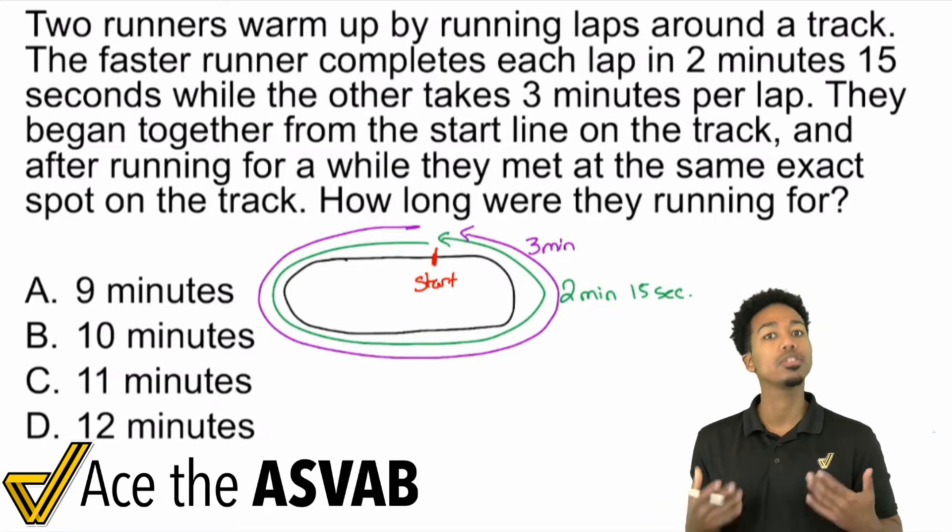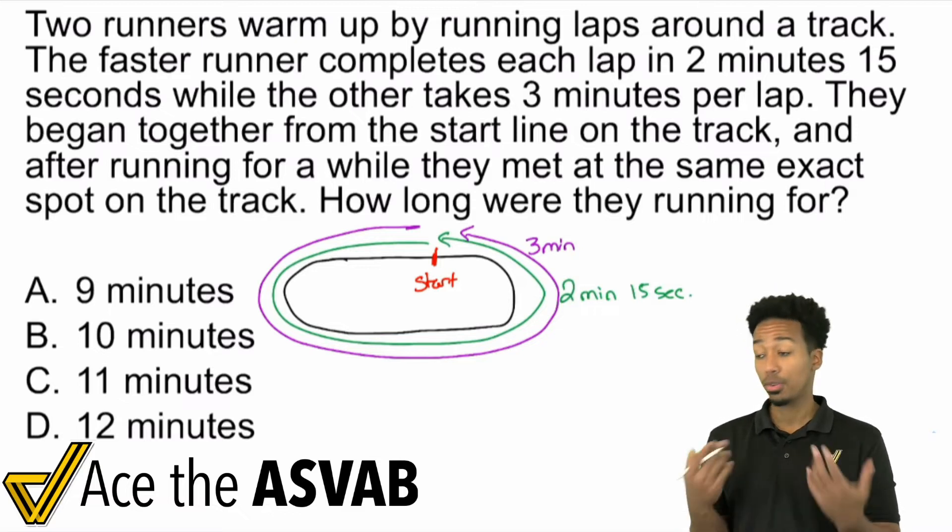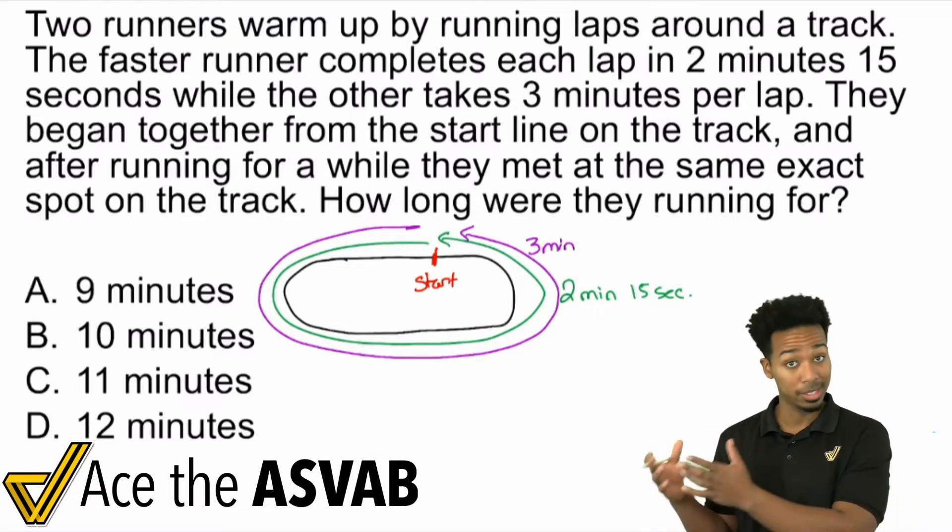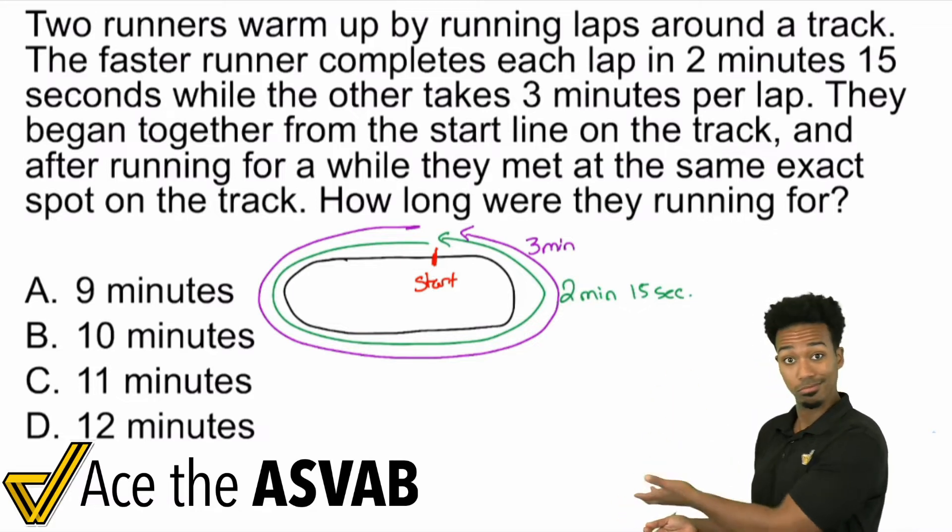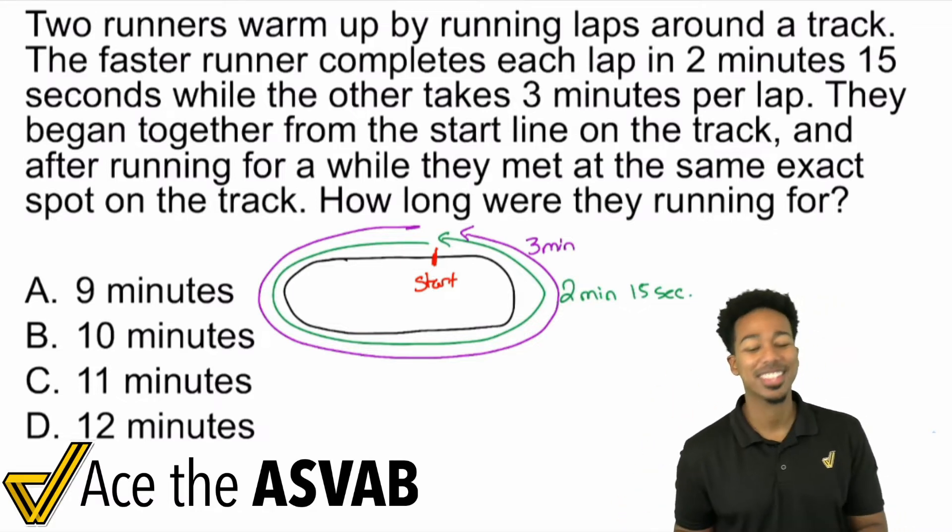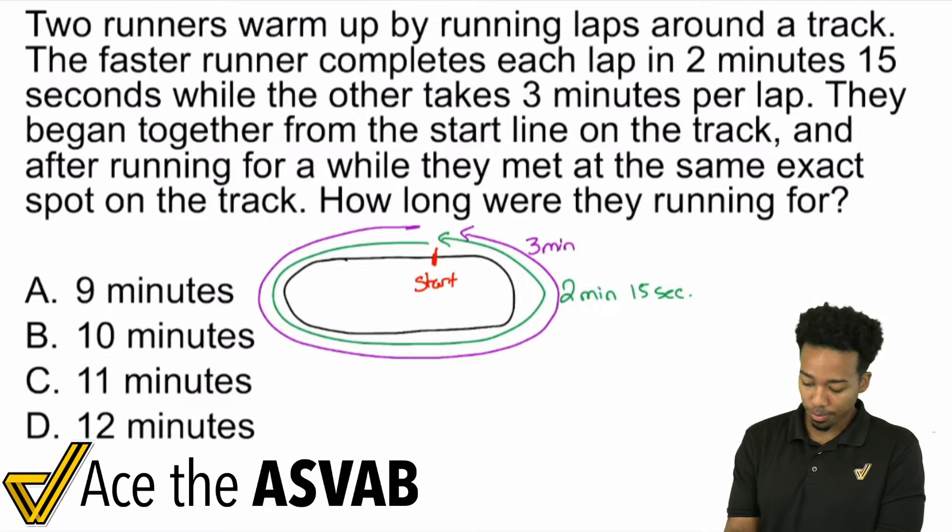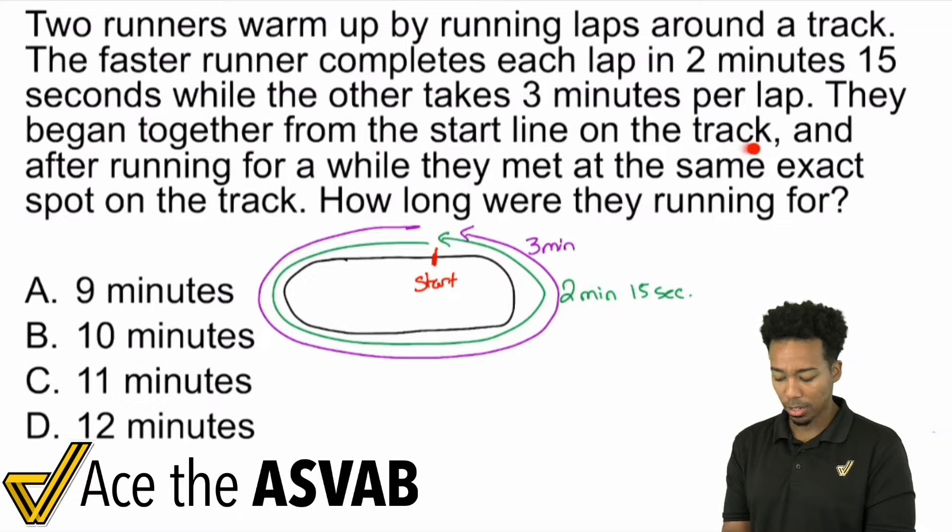And the more you can get that wanted and desired outcome, which is the correct answer. So with that, here we are. That's all we've read so far. Two minutes 15 seconds. The other takes three minutes per lap. They began together from the start line on the track. And after running for a while, they met at the same exact spot on the track. How long were they running for? Okay.